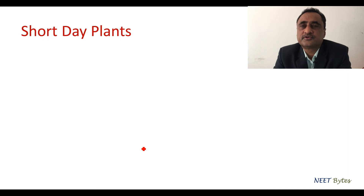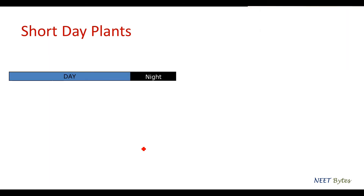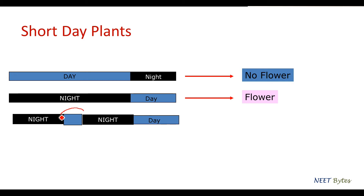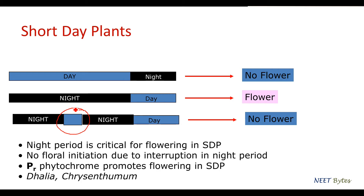Let's look at short day plants. Short day plants are those in which flowering occurs when the exposure is less than the critical day length. If the day length is more and night period is less, the plant will not flower. On the contrary, if the night period is more and the day is less, it will flower. But if there is an interruption of the night period by light, it will not flower. We can conclude that the night period is critical for flowering in short day plants, and PR phytochrome promotes flowering in short day plants.